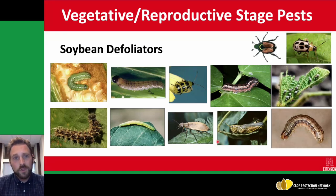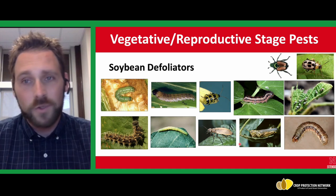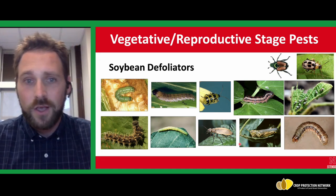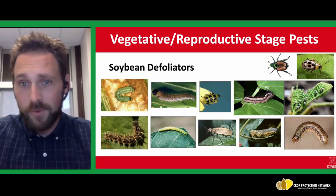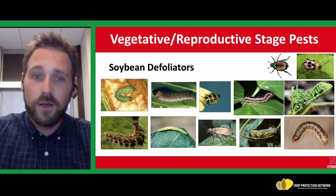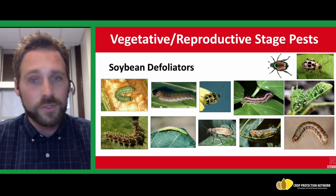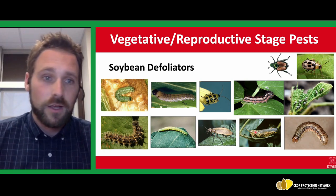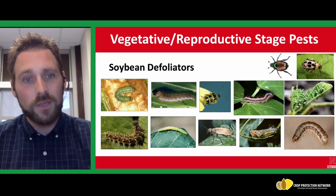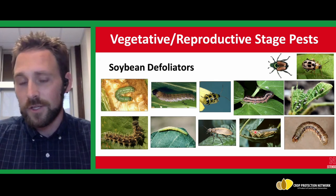Moving on to transition between the vegetative and reproductive stages, soybean defoliators are a fairly big topic with a lot of focus. You can see a whole range of defoliators: bean leaf beetle, various lepidopteran pests like yellow striped armyworm, thistle caterpillar, fall armyworm, green clover worm, blister beetles, grasshoppers, and several others — depending on the region and area you're located in. Each one of these is important in their own biology and ecology, and I'll give you some highlights to provide insight into understanding their relative role in making management decisions when you're in a soybean field looking at defoliation.